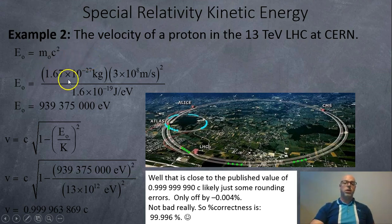We take the mass, 1.67 × 10⁻²⁷ kilograms, multiply by the speed of light, 3 × 10⁸ meters per second squared, divided by the number of joules per electron volt. And we get 939,375,000 electron volts. When I looked it up, it actually said it was 938 mega electron volts, so we're off by just one little digit here. It's probably because we're using rounded values.